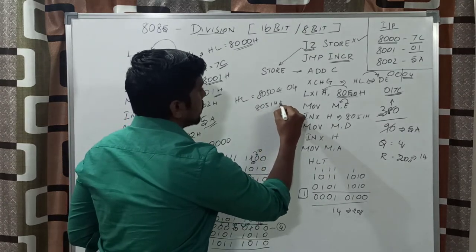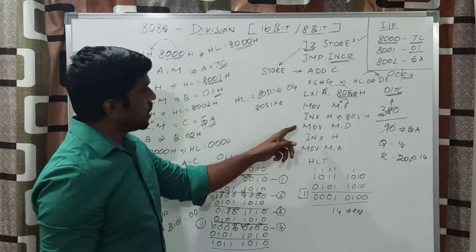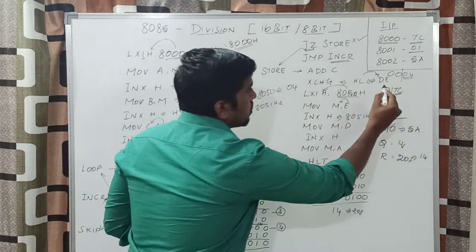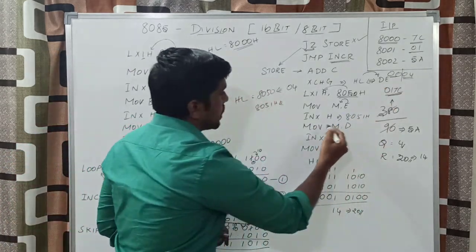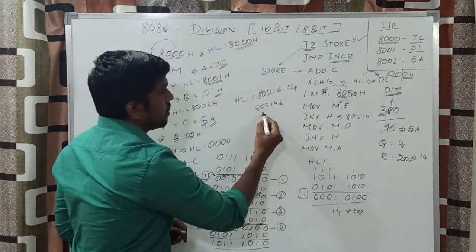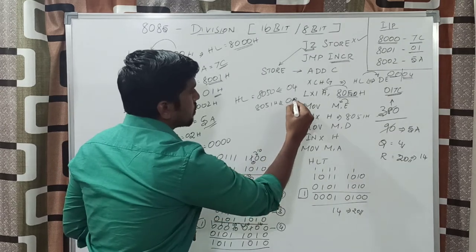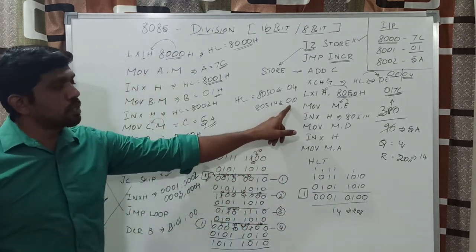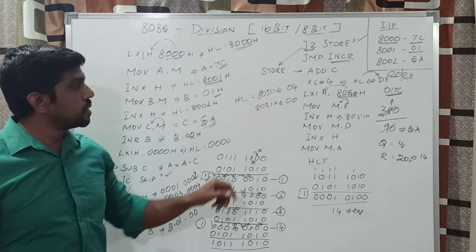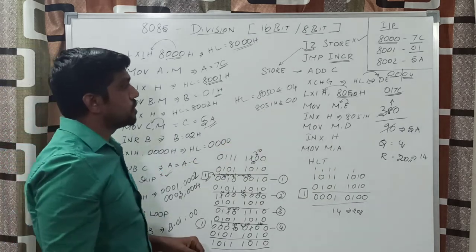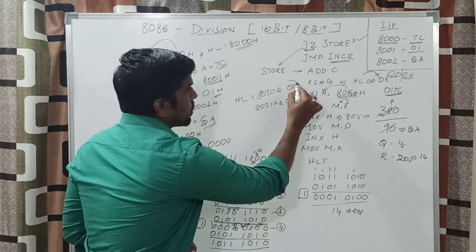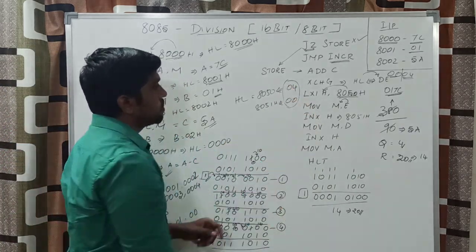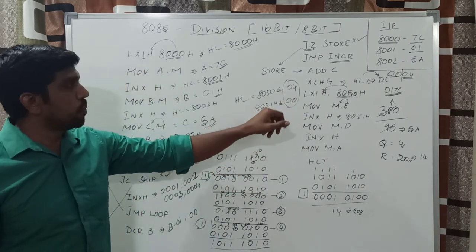After the increment, the next instruction is MOV M, D. Whatever value is present in the D register, that content is transferred to memory location 8051h. The D value is 00h. This content is transferred to memory location 8051h. So you are transferring the quotient value 0004h across memory locations 8050h and 8051h.